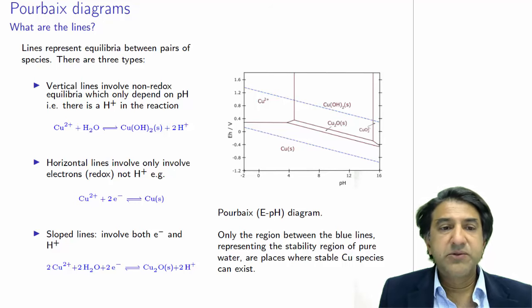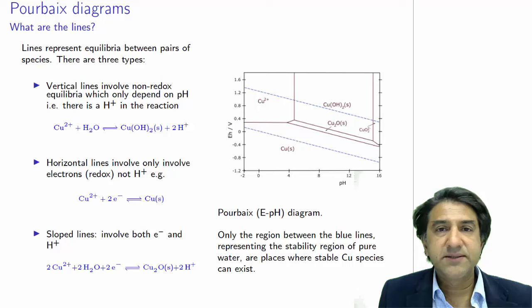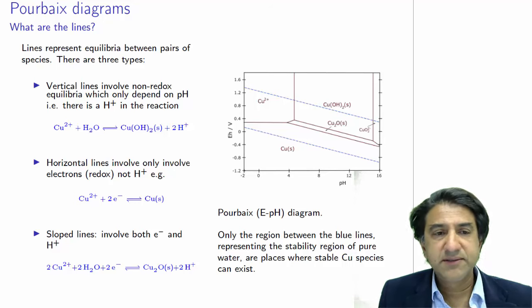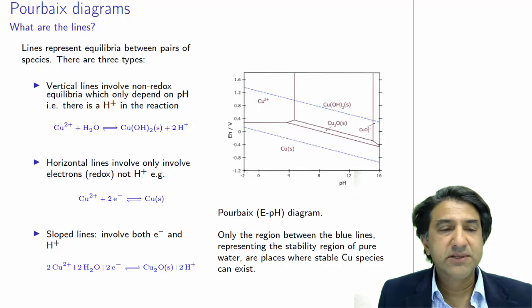So let's look a little bit more carefully at the lines on these Pourbaix diagrams. The lines are the boundaries of these countries, the countries of stable species. And we need to figure out how to find them. So let's have a look at some basic features.